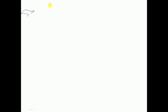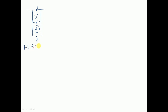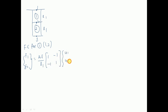This is the bar element divided into two parts: the first element and the second element. Node number one, node number two, and node number three. Element one is connected by nodes one and two. Therefore, the finite element equation for element one is: {f1, f2} = (AE/l1) × [1, -1; -1, 1] × {u1, u2}.